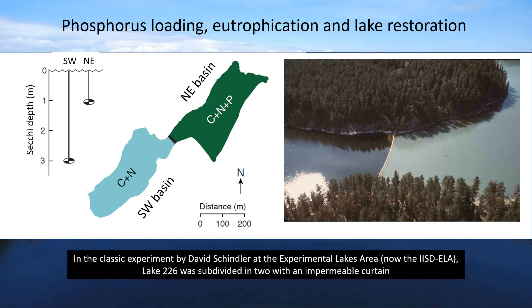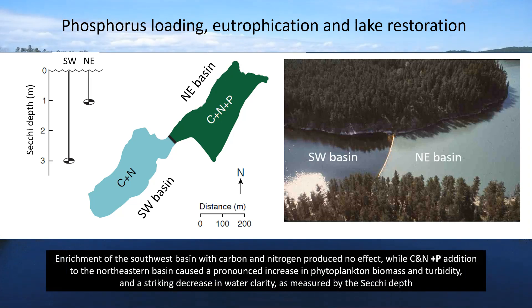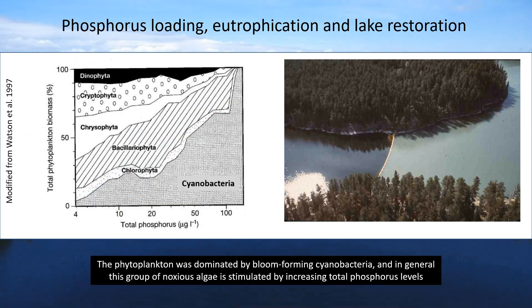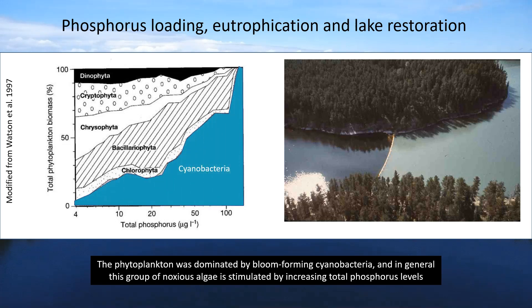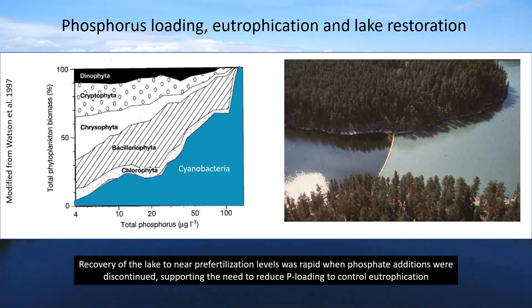In the classic experiment by David Schindler at the Experimental Lakes Area, now the IISD-ELA, Lake 226 was subdivided in two with an impermeable curtain. Enrichment of the southwest basin with carbon and nitrogen produced no effect, while C, N, plus P addition to the northeast basin caused a pronounced increase in phytoplankton biomass and turbidity, and a striking decrease in water clarity as measured by the Secchi depth. The phytoplankton was dominated by bloom-forming cyanobacteria, and in general, this group of noxious algae is stimulated by increasing total phosphorus levels. Recovery of the lake to near pre-fertilization levels was rapid when phosphate additions were discontinued, supporting the need to reduce P-loading to control eutrophication.